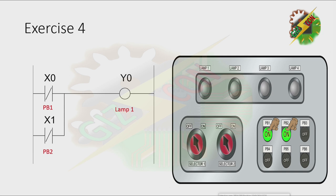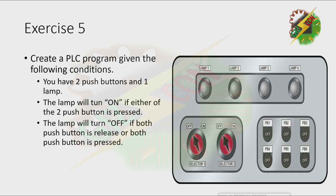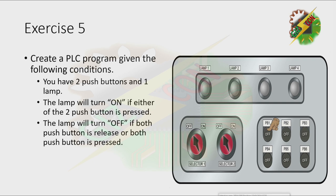Let's go to Exercise 5. Create a PLC Program given the following conditions. You have two push buttons and one lamp. The lamp will turn on if either of the two push buttons is pressed. The lamp will turn off if both push buttons are released or both push buttons are pressed. When I press PB1, the lamp will turn on. When I press PB2, the lamp will turn on also. But when I press both push buttons, nothing will happen — the lamp will turn off.